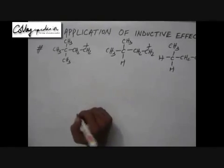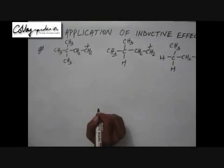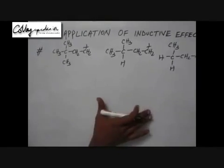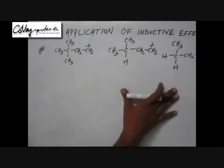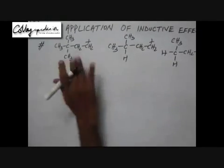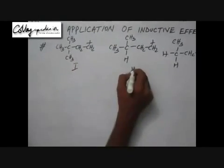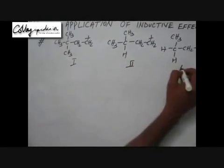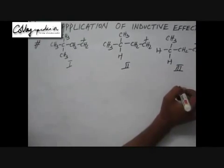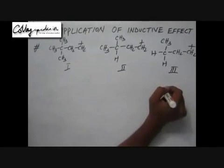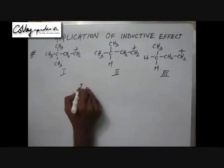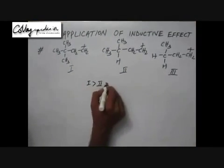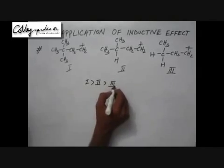Let's move ahead on understanding the concept and applications of inductive effect. We have been given 3 intermediates and are asked to give the stability order. Let's call them intermediate 1, 2, and 3. The answer is: intermediate 1 is the most stable, followed by 2, and then 3.